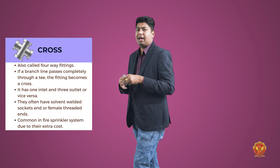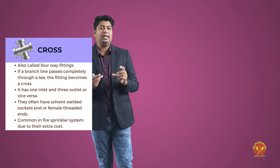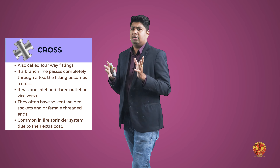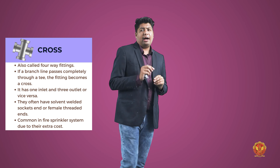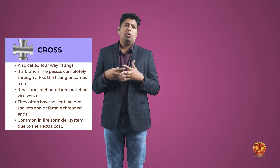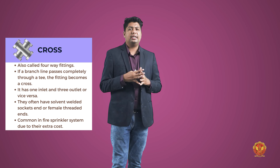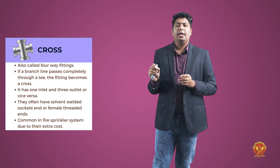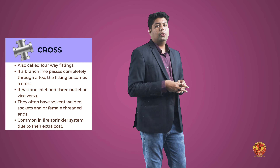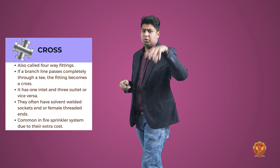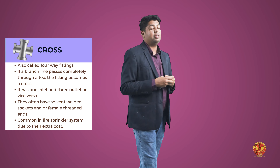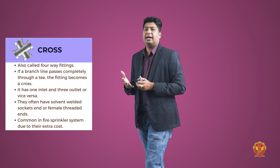Cross fitting — जब midpoint पर चारों तरफ connection distribute करना हो तो cross use करते हैं। इसमें one inlet और three outlets होते हैं — एक तरफ से supply आती है और बाकी तीनों तरफ supply जाती है। यह fire sprinkler system में common है — जहाँ एक तरफ से line आती है और चारों तरफ pipe fitting का network बना होता है।